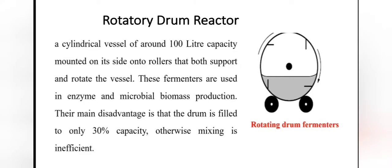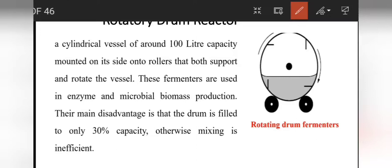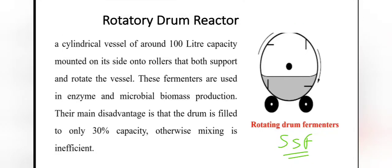The next bioreactor is the rotatory drum reactor. In this type of bioreactor, the entire vessel is rotated. These fermenters are used in enzyme and microbe biomass production. A disadvantage is that the drum is filled to only 30% capacity; otherwise, mixing is inefficient.